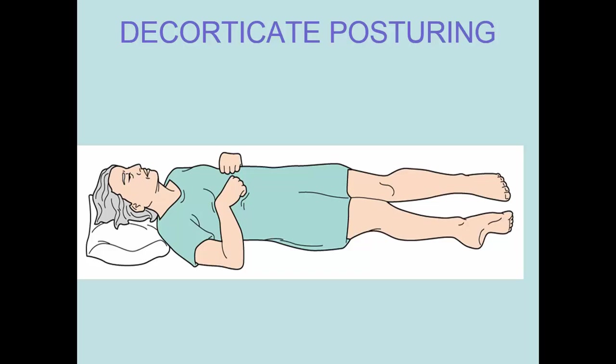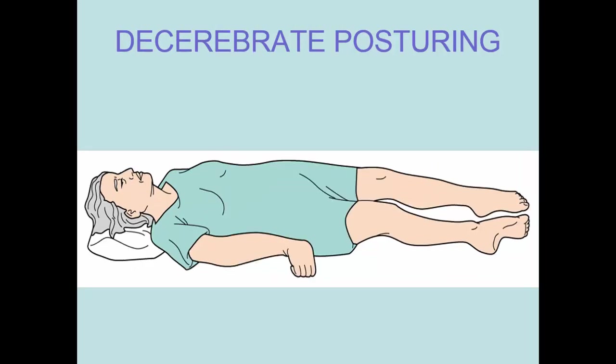Decorticate posturing: the lower extremities are extended and internally rotated, and the upper extremities are flexed and curled up. Remember decorticate because the arms are flexed toward the cord. Decerebrate posturing is worse than decorticate posturing — it means we're having progression and deterioration. The upper extremities are now extended and rotated externally outward — away from the cord. Decorticate is toward the cord; decerebrate is away from the cord.